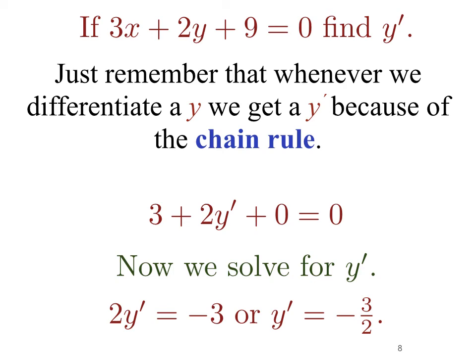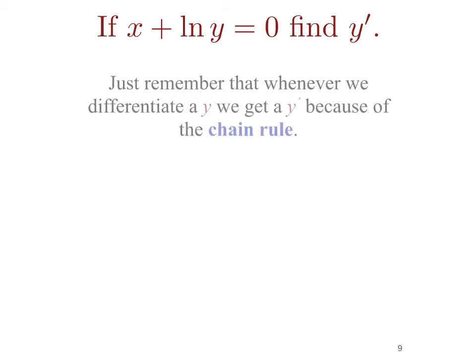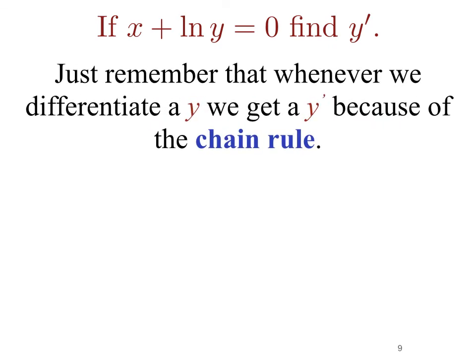Let's look at a final example. This one includes natural log. If we have x plus the natural log of y equals 0, we need to find y prime. Again, what do we need to remember? That since y is the dependent variable, whenever we differentiate a y we should get a y prime term, and this is due to our chain rule.